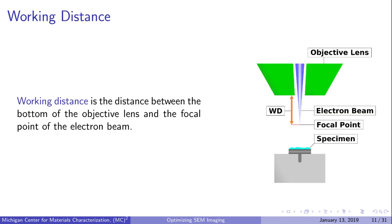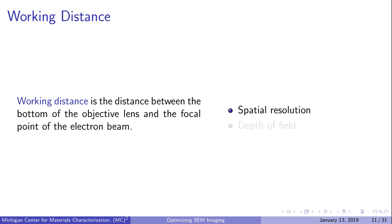The first imaging parameter we'll discuss is working distance (WD), which is the distance between the bottom of the objective lens and the focal point. When your sample is in focus, working distance becomes equivalent to the distance between the objective lens and the sample surface. Using a smaller working distance increases spatial resolution, making images appear sharper and more detailed. Working distance also affects depth of field—with a larger working distance, more of your sample surface is in focus, but the focus isn't as sharp. If your sample has large topographical features, you may want to use a larger working distance so features of different heights are in focus.